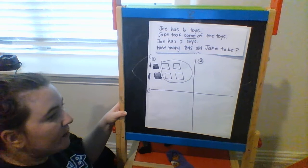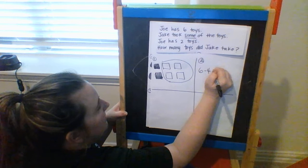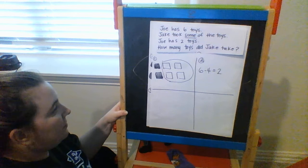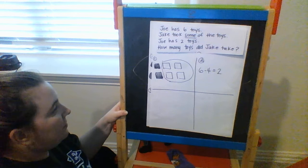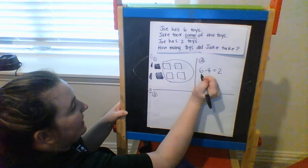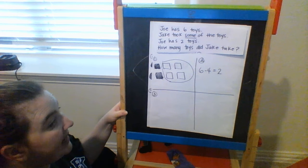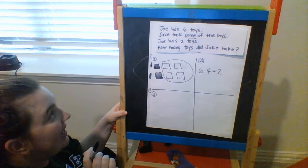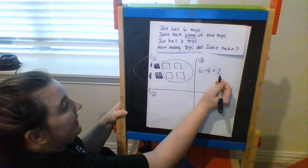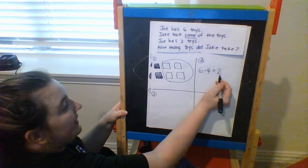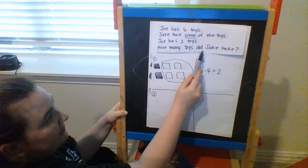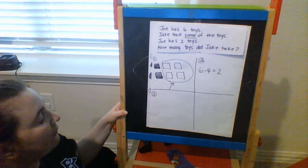Now that we have a picture, let's write a number sentence to match. Our picture shows that we started with 6 toys, then Jake took 4 of those toys away and left Joe with 2 toys. The real answer: just because in the number sentence I write 6 minus 4 equals 2, that doesn't mean that 2 is the answer — it means 2 is part of my number sentence. The answer has to answer the question: how many toys did Jake take? Jake didn't take 2 toys; those are the 2 toys he left. He actually took 4 toys. So even though 2 is the answer to my number sentence, the answer to the word problem is actually 4. For my real answer, I'm going to write 4 toys.